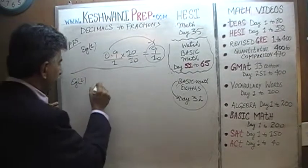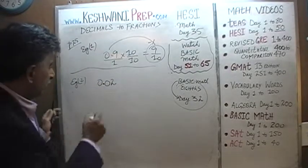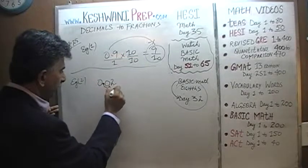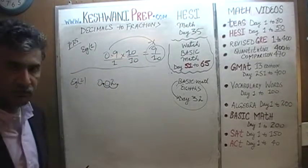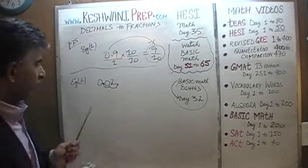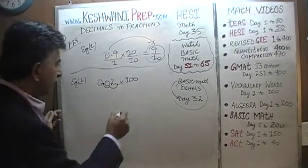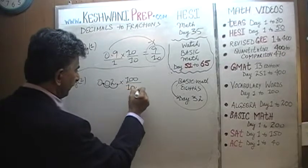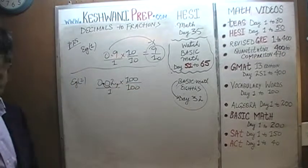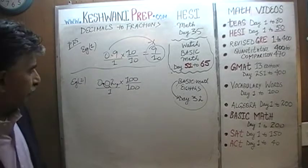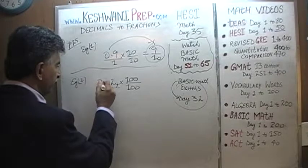The next one we have is 0.02. Here we need to move the decimal two places — one and two. In order to move the decimal two spots, we need to multiply by a hundred. Multiply top by a hundred, multiply bottom by a hundred. Remember, if there is nothing at the bottom, that means there is one at the bottom. Now, if we multiply 0.02 by a hundred, we will be able to move the decimal.